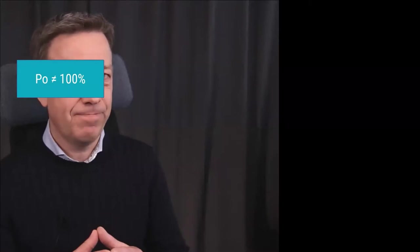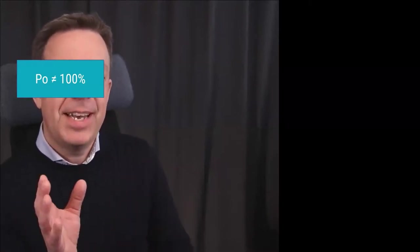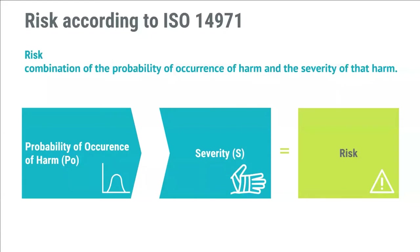Let's start with some theory to get the basics right. Many believe PO should be set to 100 percent just because you work with software — please don't do that. In the risk management standard ISO 14971, risk is defined as the combination of the probability of occurrence of harm and the severity of that harm. Probability of occurrence of harm is often abbreviated as PO; severity is often abbreviated as S.